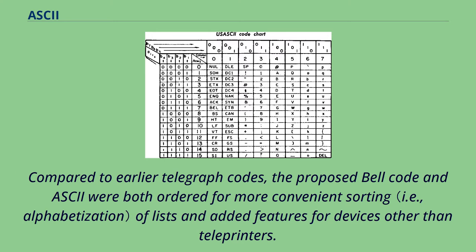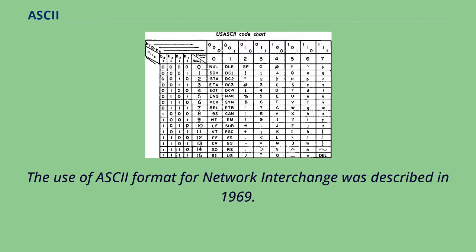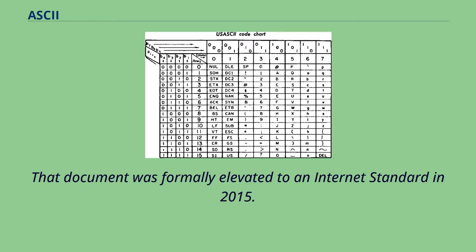Compared to earlier telegraph codes, the proposed Bell Code and ASCII were both ordered for more convenient sorting of lists and added features for devices other than teleprinters. The use of ASCII format for network interchange was described in 1969, and that document was formally elevated to an Internet standard in 2015.